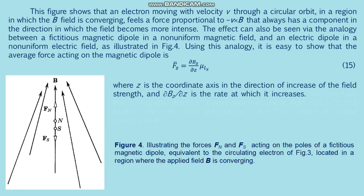Here z is the coordinate axis in the direction of increasing field strength, and dB_z/dz is the rate at which it increases. We conclude that a magnetic dipole in a non-uniform magnetic field experiences both a torque causing precession and a force causing displacement.